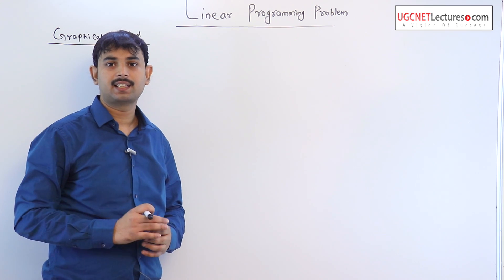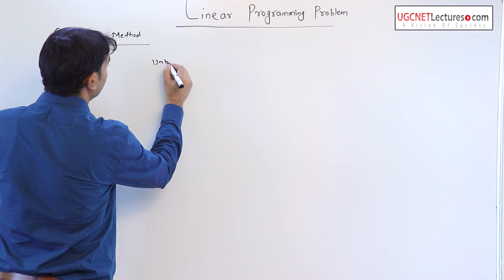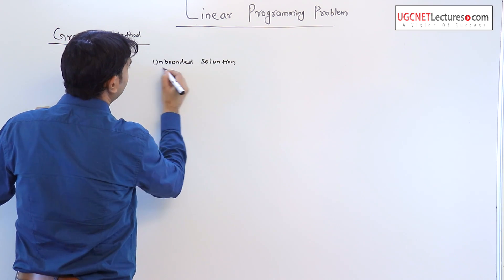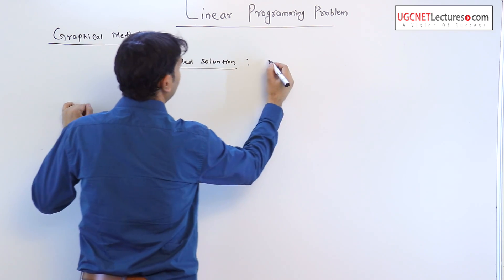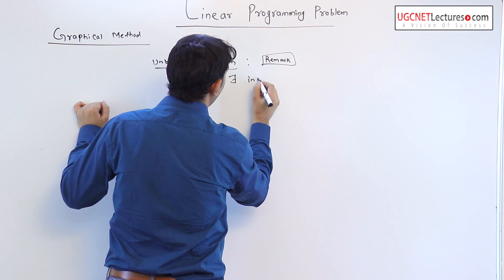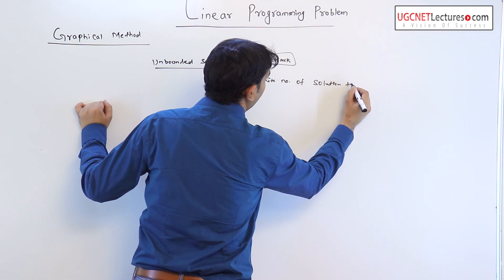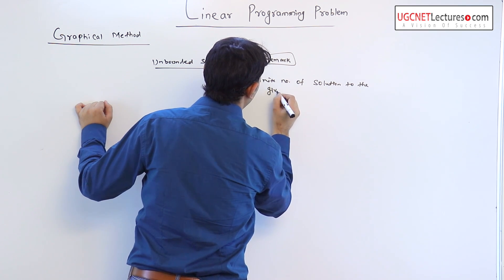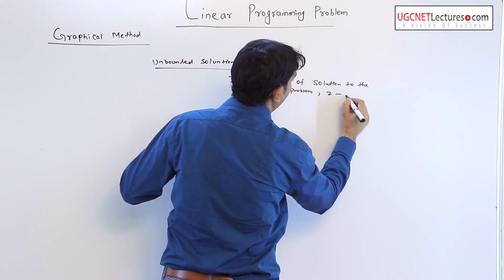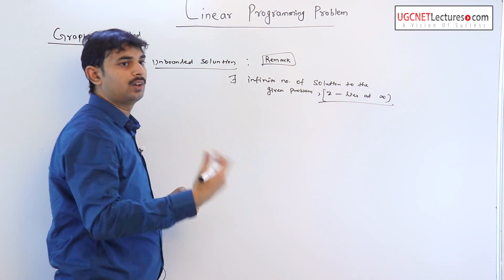An unbounded solution means that there exists an infinite number of solutions to the given problem. A remarkable point is that there exist infinite solutions to the problem, in which z lies at infinity or it increases up to infinity.